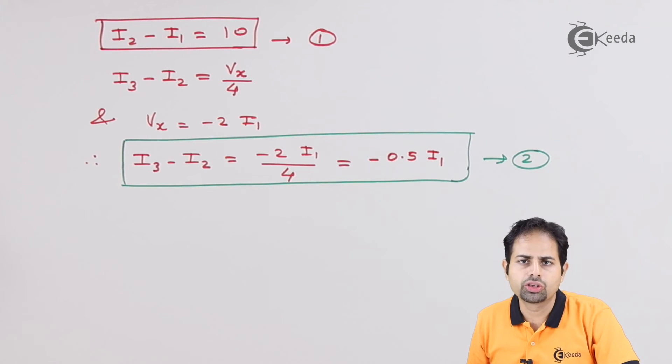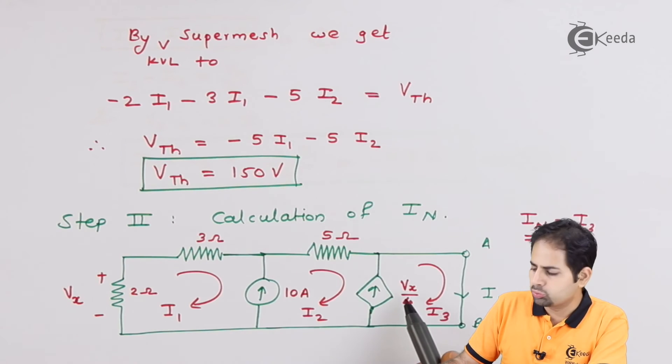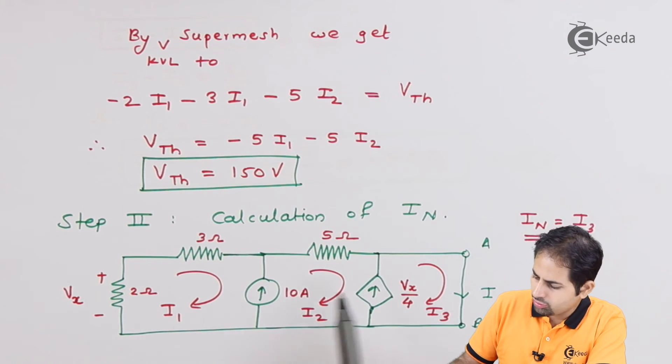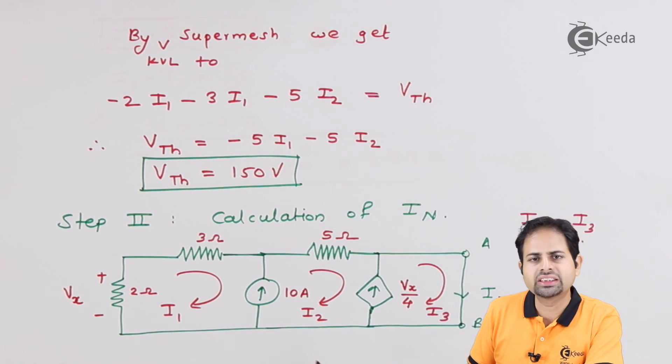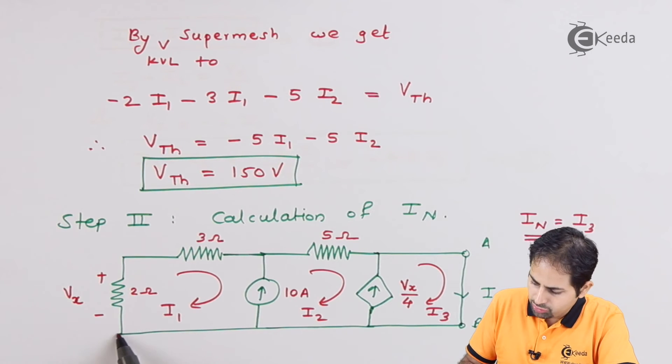So we got equation number two also. Let us go to loop number three. Well, we actually got equation by using loop two and loop three. So instead of just going to loop number three, because this is the condition of super mesh, what we will consider is the entire loop, which we considered for calculation of Vth. So starting from this point, let us give some name to this, let us give some name C and D.